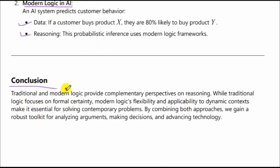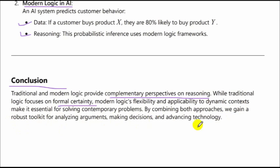Traditional and modern logic provide complementary perspectives on reasoning. While traditional logic focuses on formal certainty, modern logic's flexibility and applicability to dynamic contexts make it essential for solving contemporary problems. By combining both approaches, we gain a robust toolkit for analyzing arguments, making decisions, and advancing technology. Thank you.